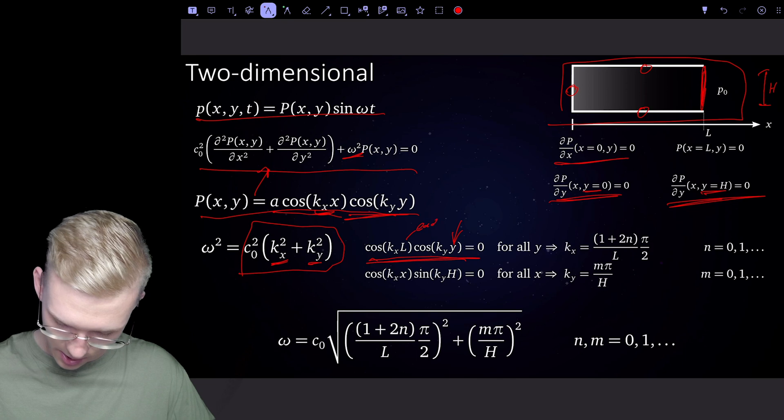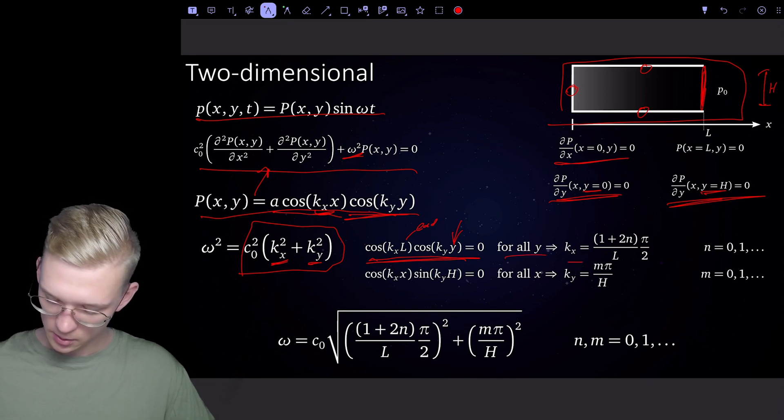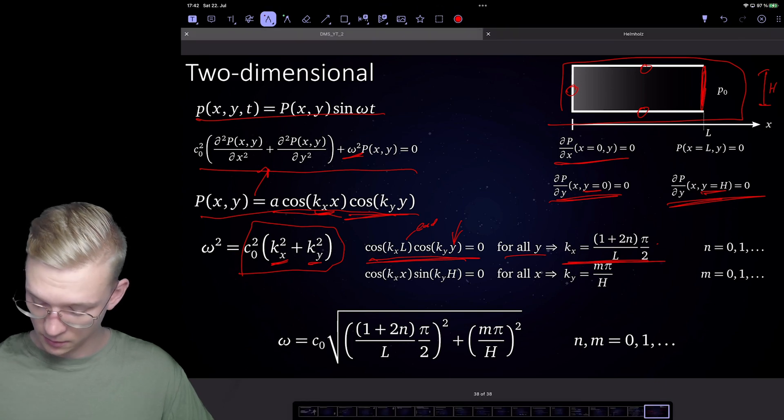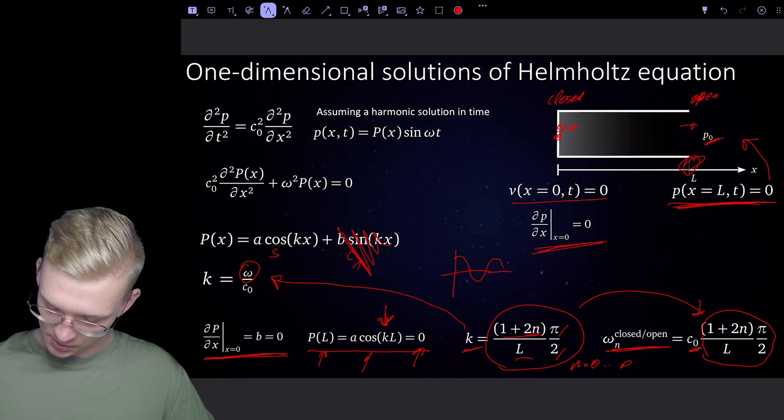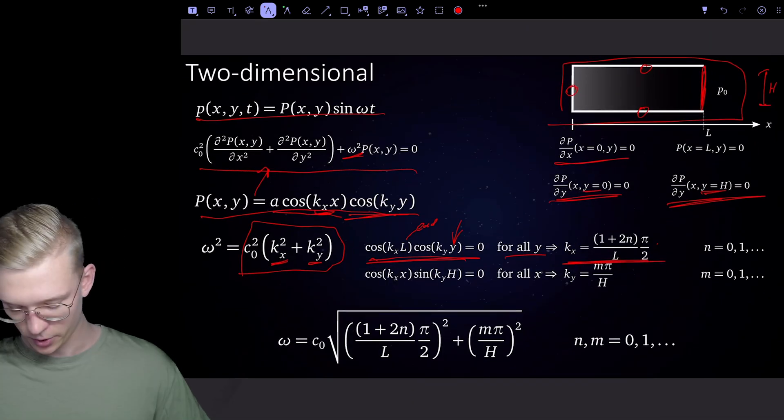And we get that kx is (1 + 2n) divided by l times pi divided by 2. So exactly the same thing that we got from the 1D solution in the x direction.